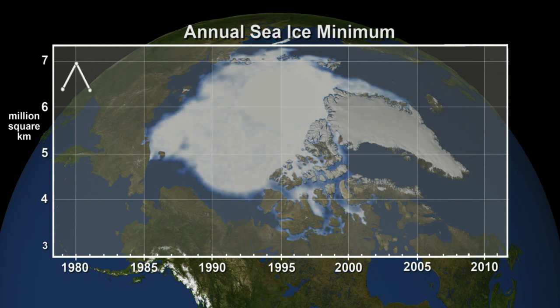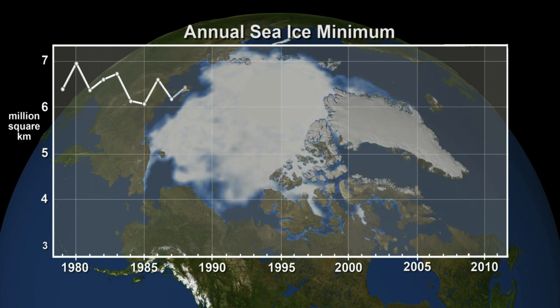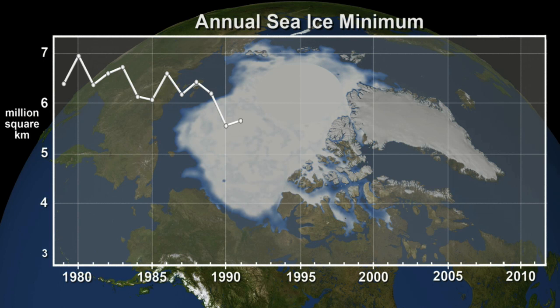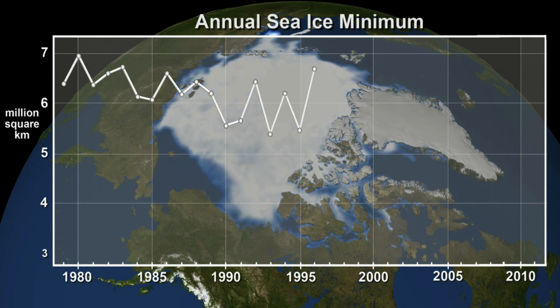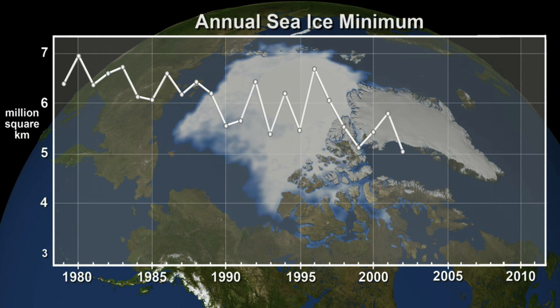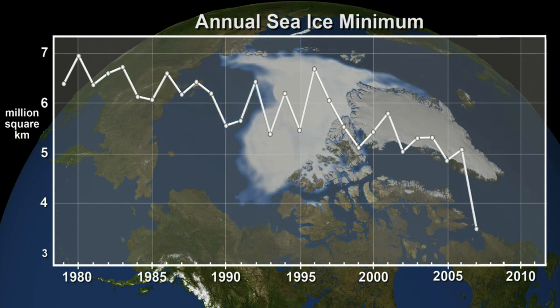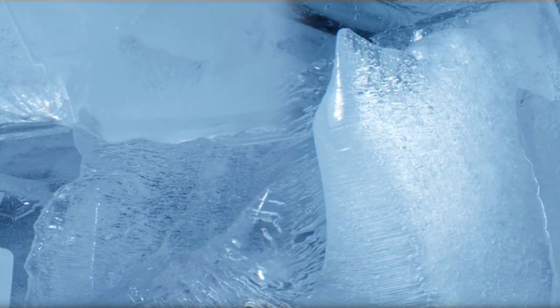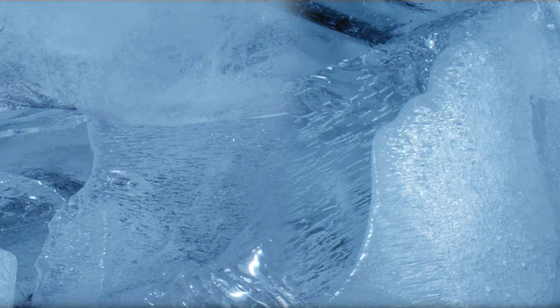More than a quarter century of satellite data reveal a substantial decrease in sea ice at the North Pole. Less ice means the Earth has a smaller reflective surface to bounce sunlight back into space. Less ice also means there's more exposed dark water to soak up the warming rays of the Sun. The Earth warms, leading to faster melting and additional ice loss. This feedback loop means the poles amplify temperature changes around the world.